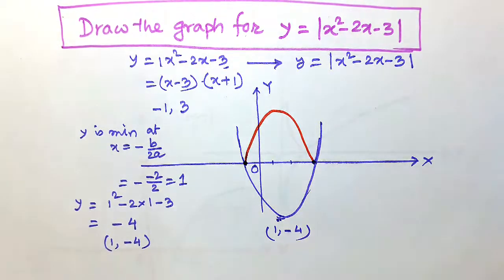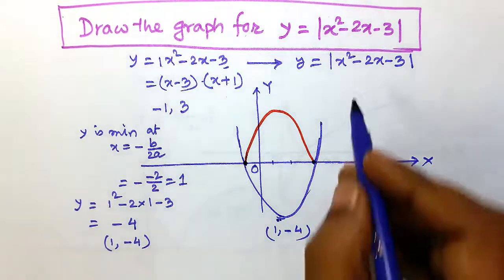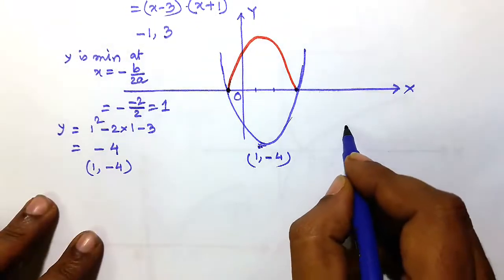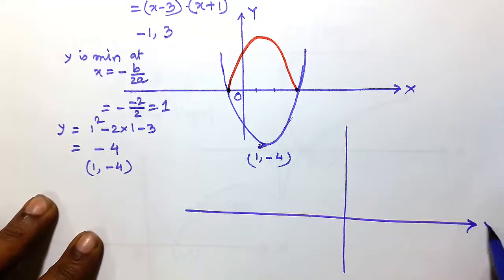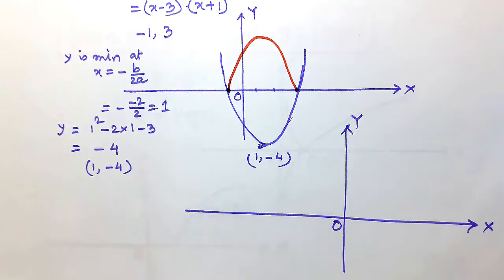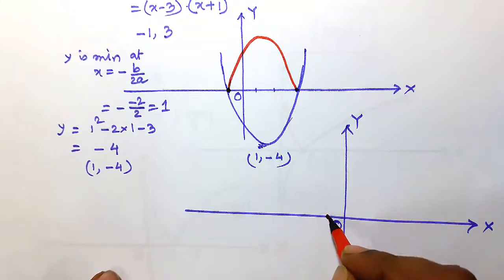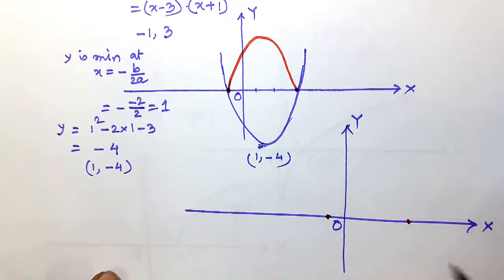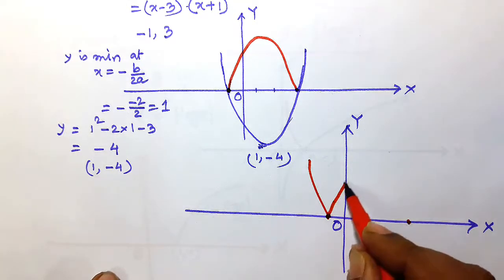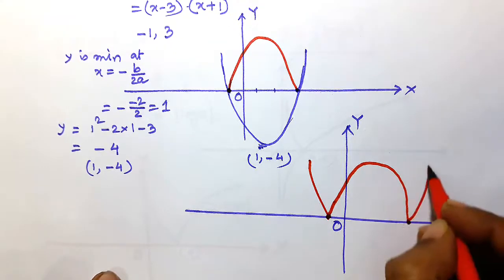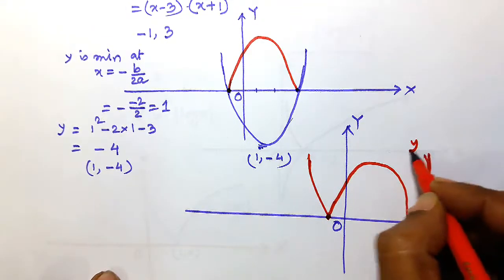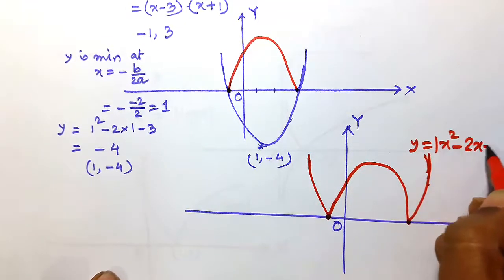So ultimately you get the curve of y is equal to modulus of x squared minus 2x minus 3. The curve passes through minus one comma zero and three comma zero, and the part that was below the x-axis is now reflected upward. This is the approximate final curve for y is equal to modulus of x squared minus 2x minus 3.